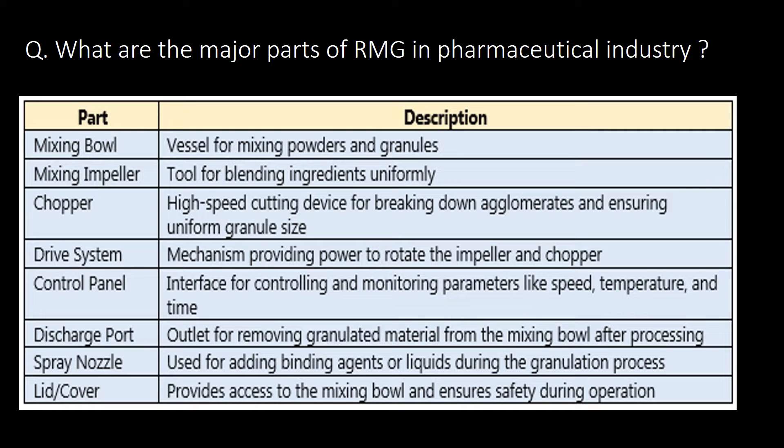What are the major parts of RMG in the pharmaceutical industry? You can refer to the table below for major parts of RMG and their description. Major parts include mixing bowl, mixing impeller, chopper, drive system, control panel, discharge port, spray nozzle, and lid or cover.